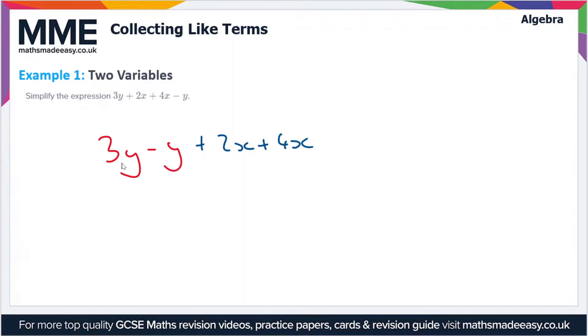So now it should be pretty clear what's going on. We minus the y from the 3y to give us 2y, and then we add the 2x and the 4x together to give us 6x. So our final answer is 2y plus 6x.